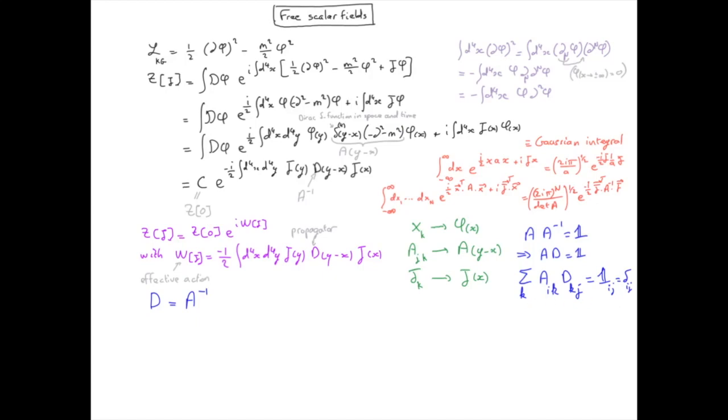If we now take the continuous limit of this equation, the sum becomes an integral and the Kronecker delta becomes a Dirac delta. The 4 here means that we are in 4 spacetime dimensions. So we have in fact 4 delta functions, the product of 4 delta functions, one for each position of space and one for time.